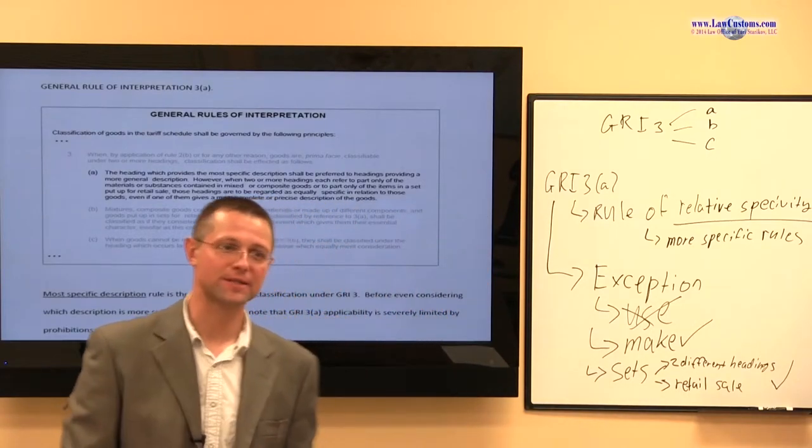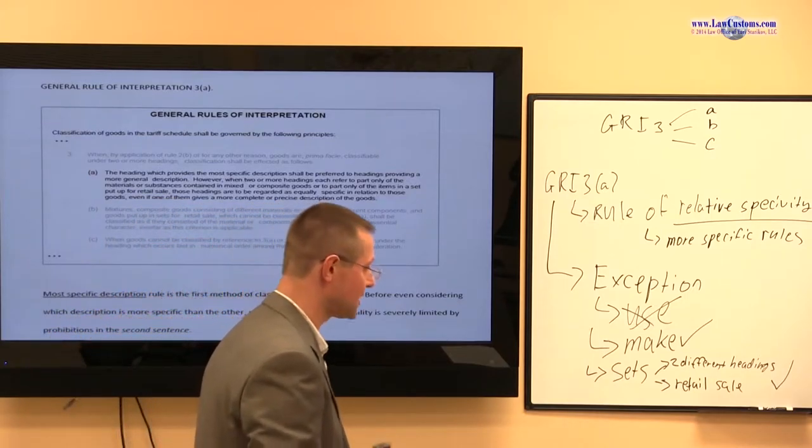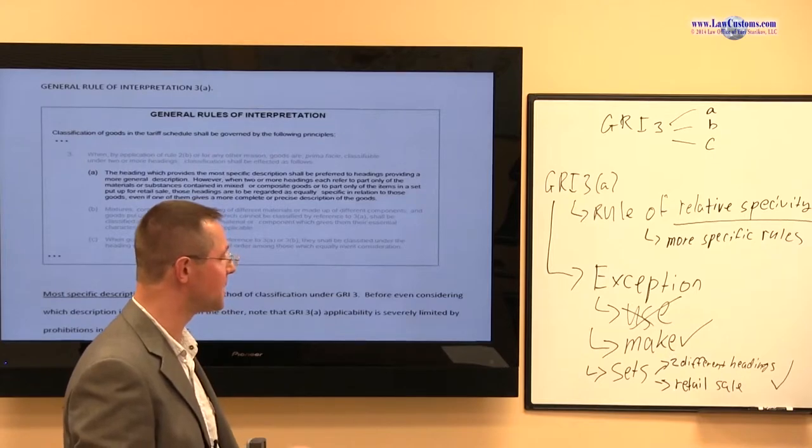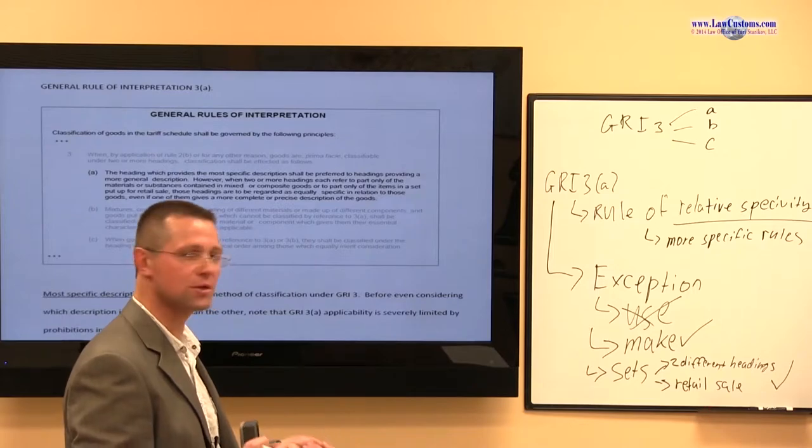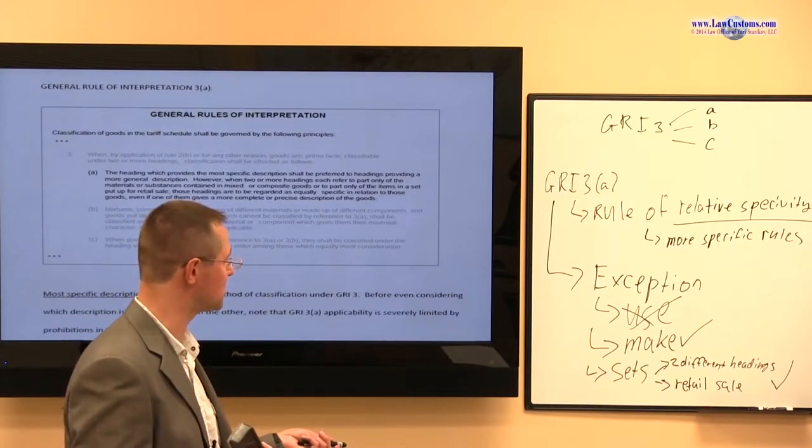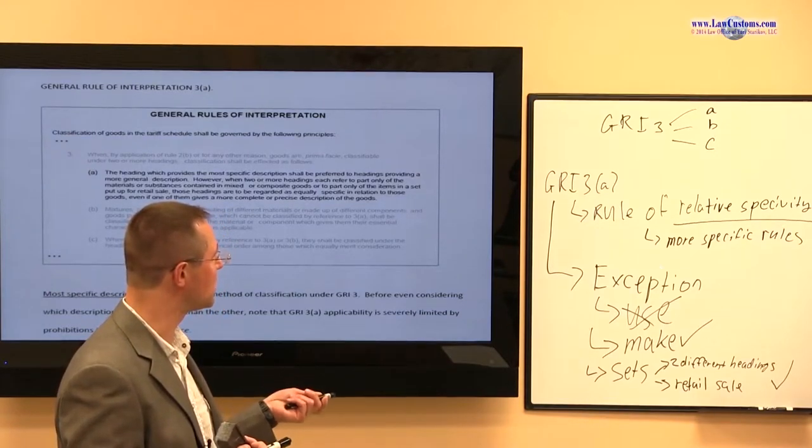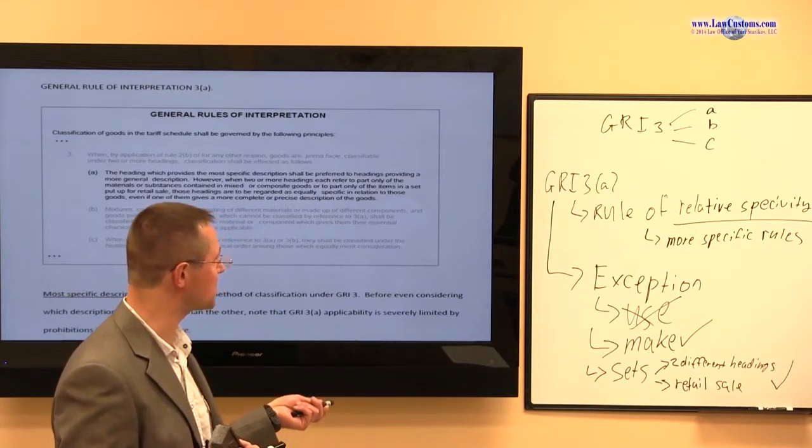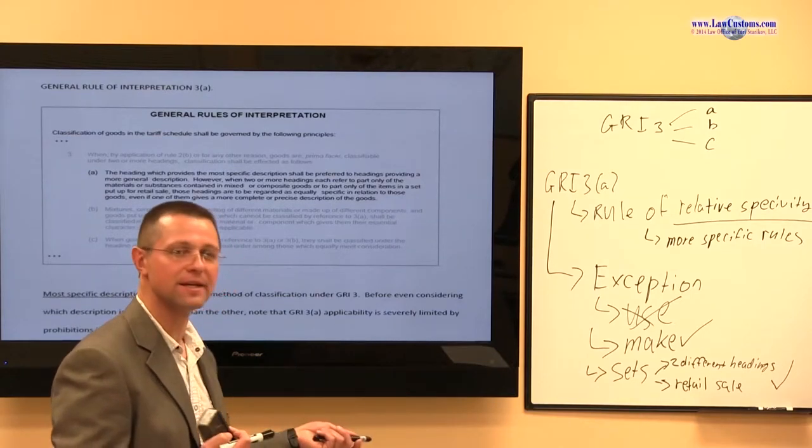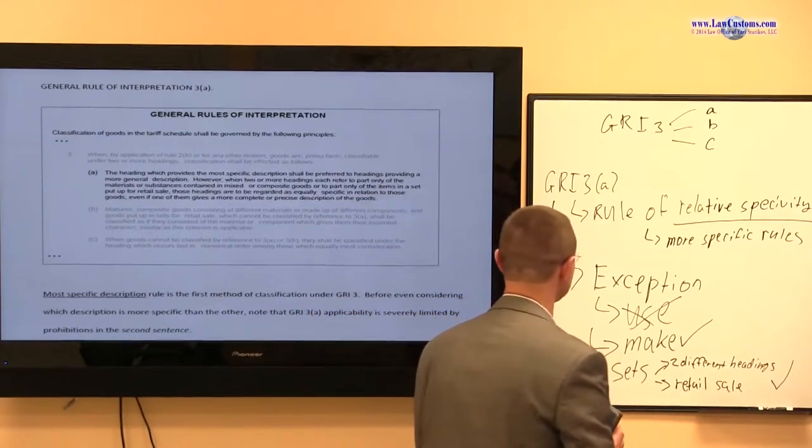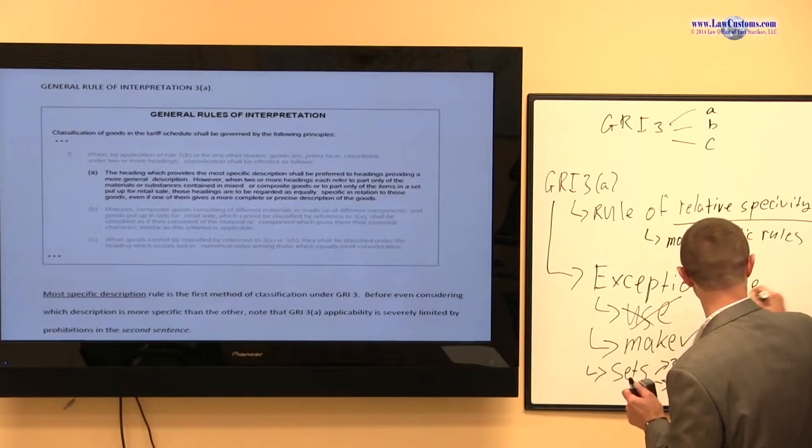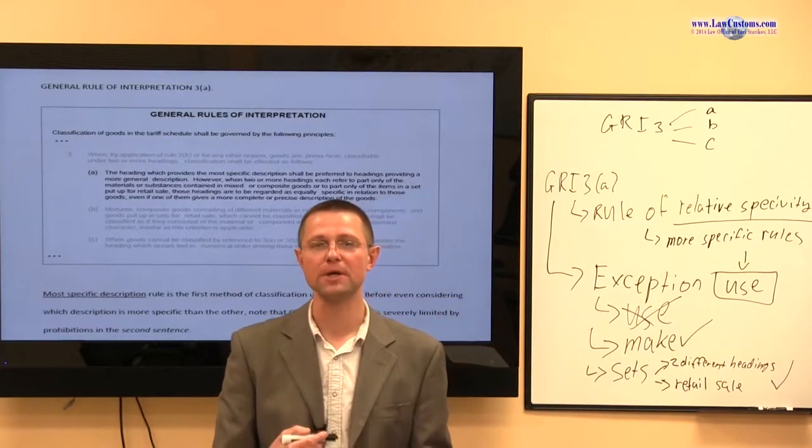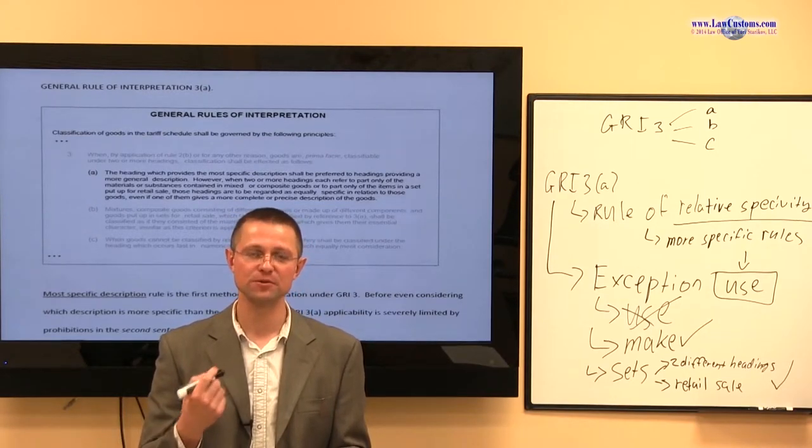In other words, the picture emerges that it's really helpful to start with the exception to see if the rule applies in the first place. And looking at the exception, we see that most of the products which are done under the make are not classifiable under the rule of relative specificity. You cannot engage in the analysis of what is more important as opposed to what is. And sets. If it's a set, most likely it will fall under the exception, so you will not even get to that analysis. But look at the cross out use provision, right?